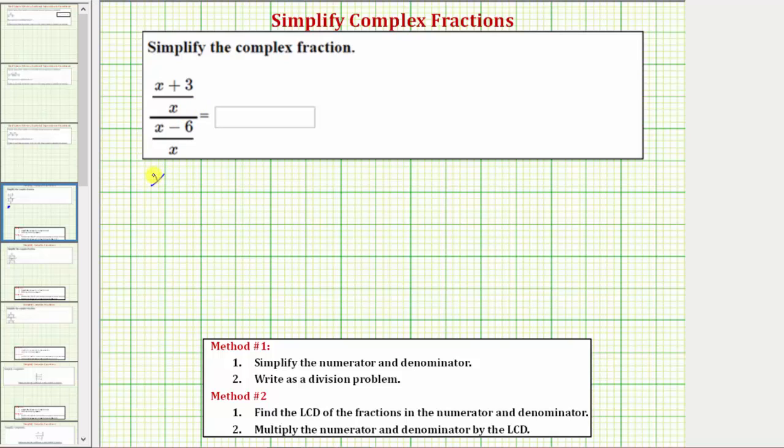Beginning with the given complex fraction, for method one we simplify the numerator and denominator if possible. In this case though, notice how we cannot simplify the fraction on top or the fraction on the bottom. So we go to step two, which is to write the complex fraction as a division problem.